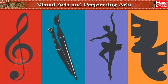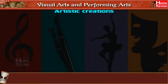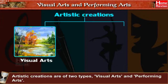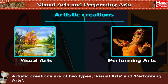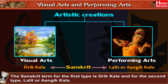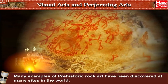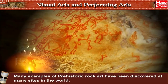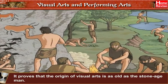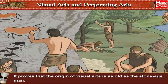Artistic creations are of two types: visual arts and performing arts. The Sanskrit term for the first type is Drikk Kala and the second type is Lalit or Angeek Kala. Many examples of prehistoric rock art have been discovered at many sites in the world, proving that the origin of visual arts is as old as the Stone Age.